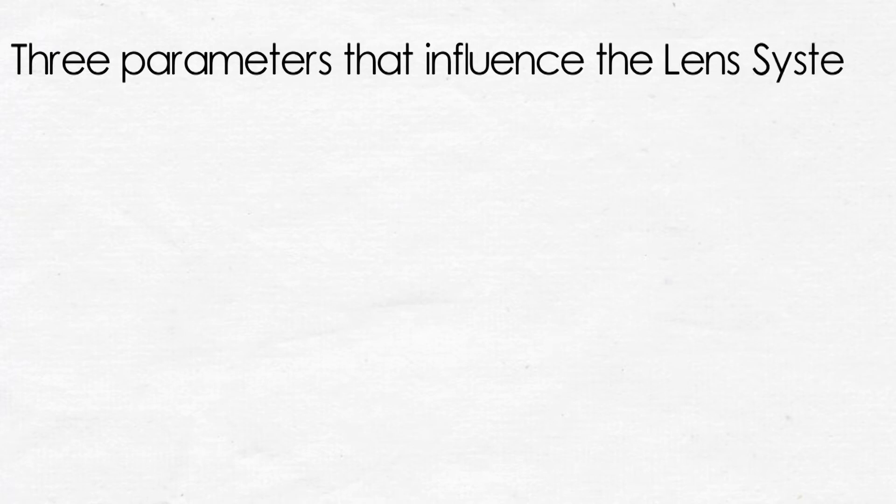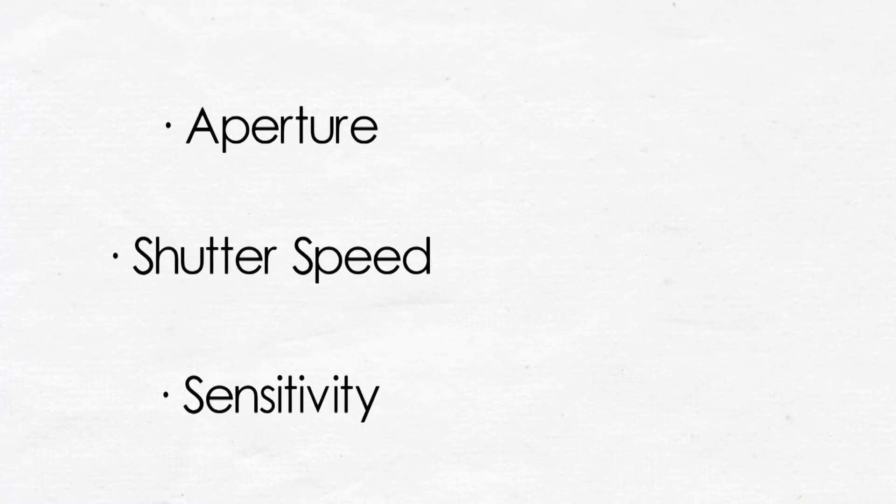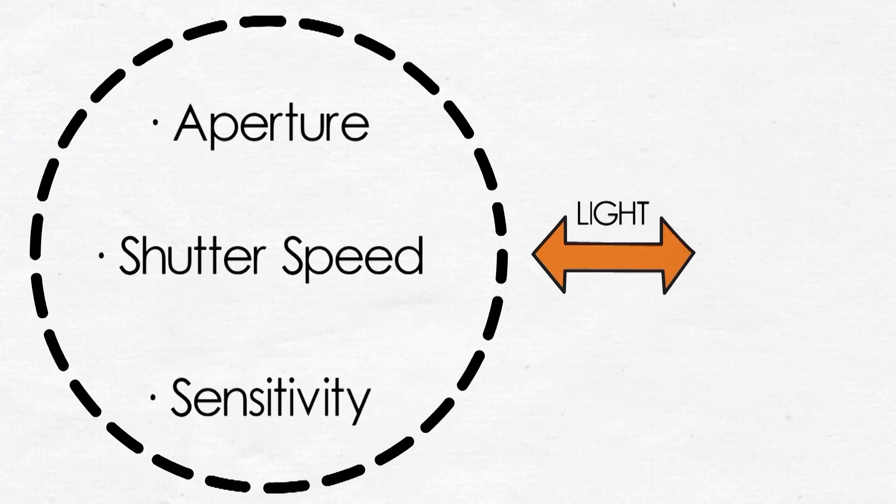Three parameters that influence the lens system and the quality of the image are the aperture, the shutter speed, and the sensitivity. They influence the amount of light that enters into the lens system and decide the exposure. We need to learn about these so then we can take photographs with the correct exposure. Now we are going to learn more about these with the help of Mr. Desi Khan Krishnan.